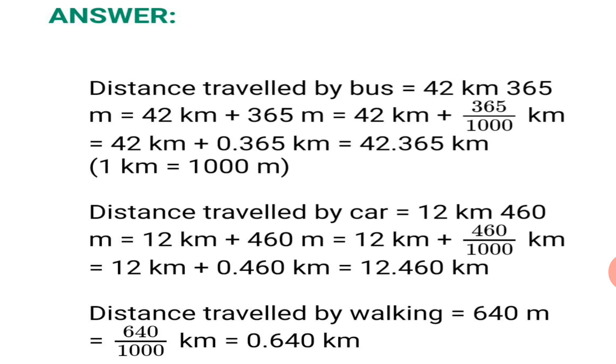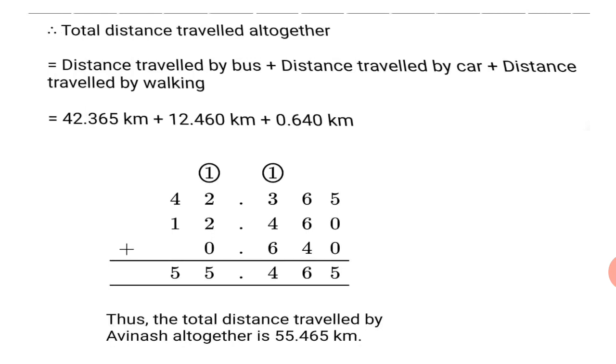Next, distance traveled by car is equal to 12 kilometers, 460 meters. Same, you have to write it finally as equal to 12.460 kilometers. How you get that is shown in the form of steps. Then, distance traveled by walking is 640 meters. 640 meters means when we convert it into kilometers, we have to divide by 1000. That gives us 0.640 kilometers. Now that we have converted this entire numbers into decimal fractions, the distance, we will add them using this decimal fractions.